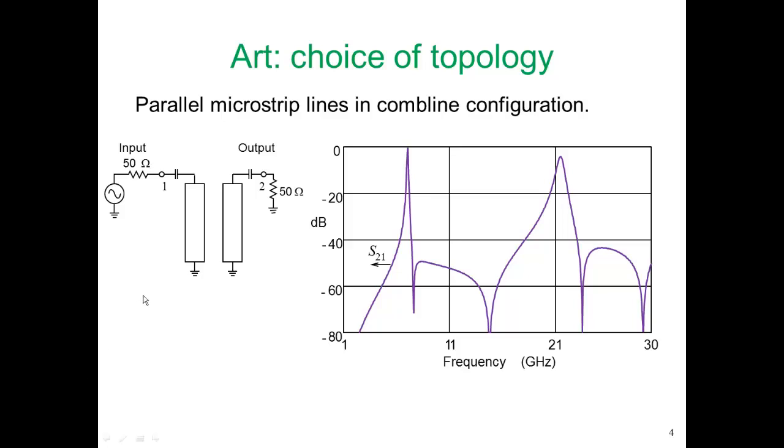So here are two parallel microstrip lines. This is called a combline configuration. These short circuits here indicate a combline configuration, and we connect to the coupled lines with a port 1 here and a port 2 over here.